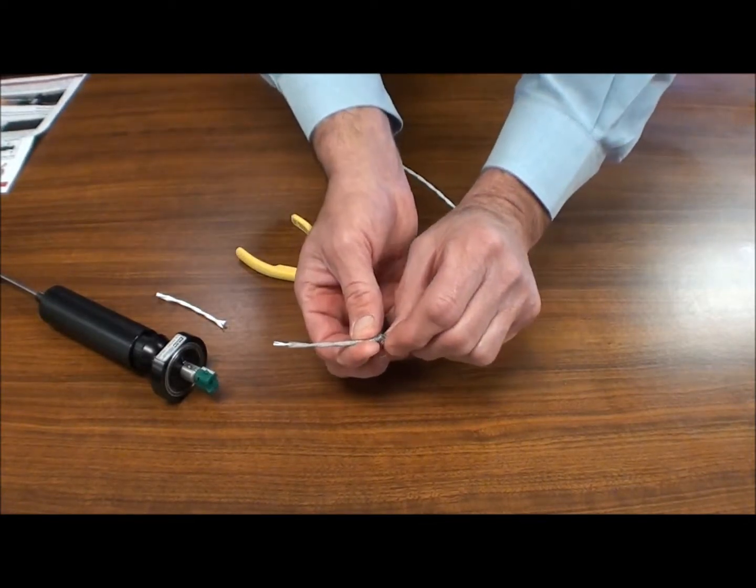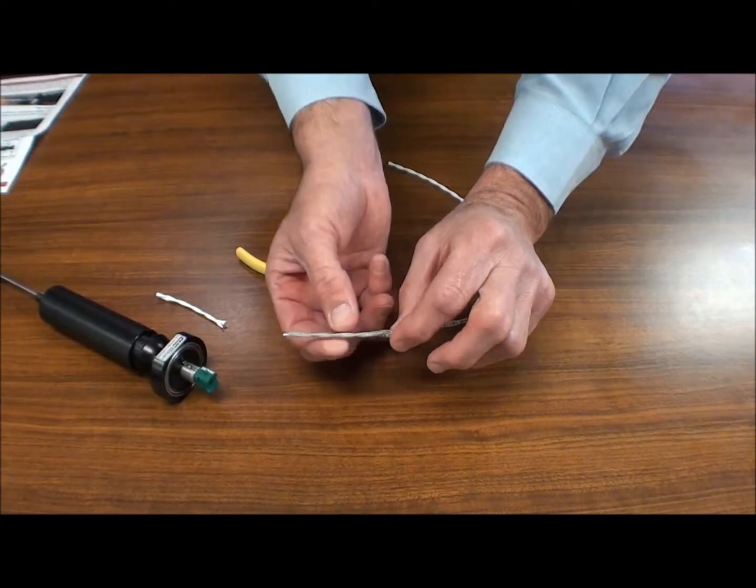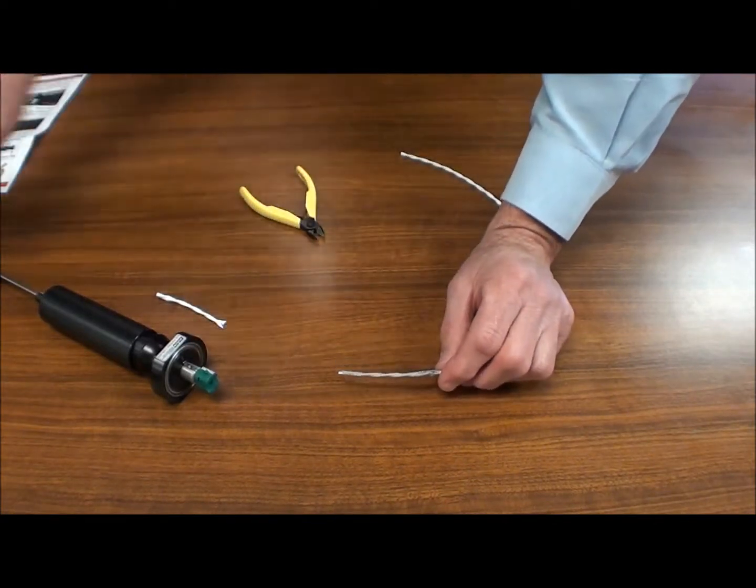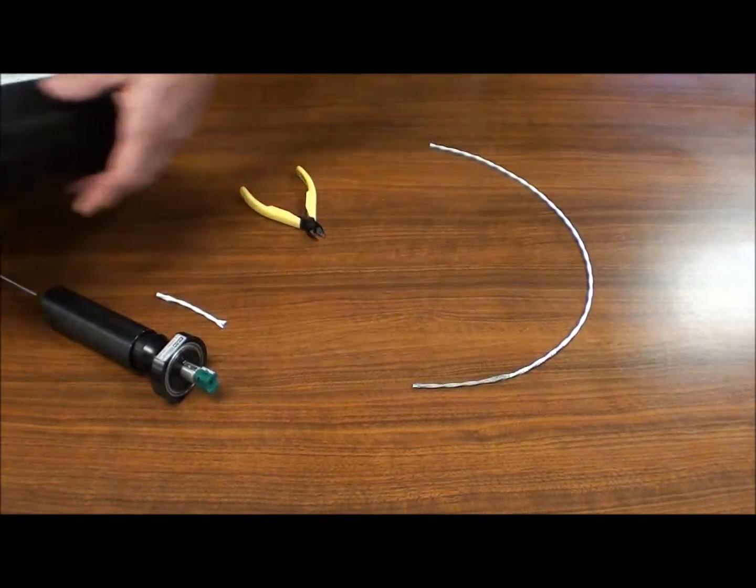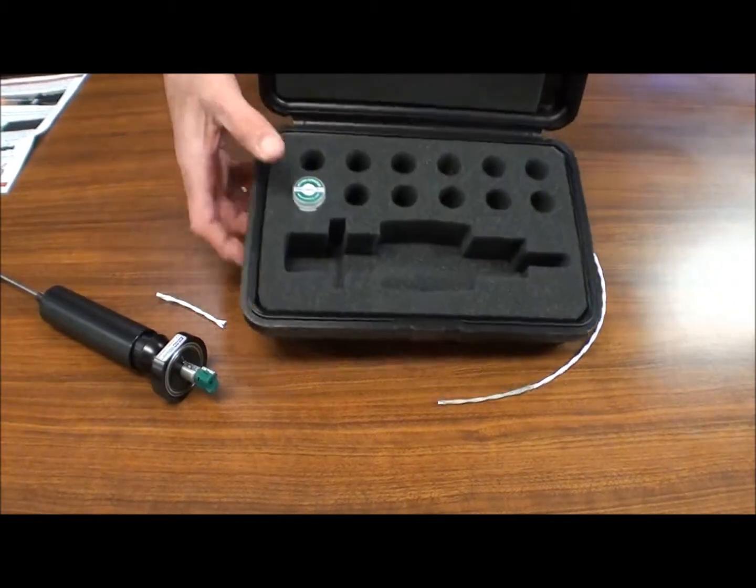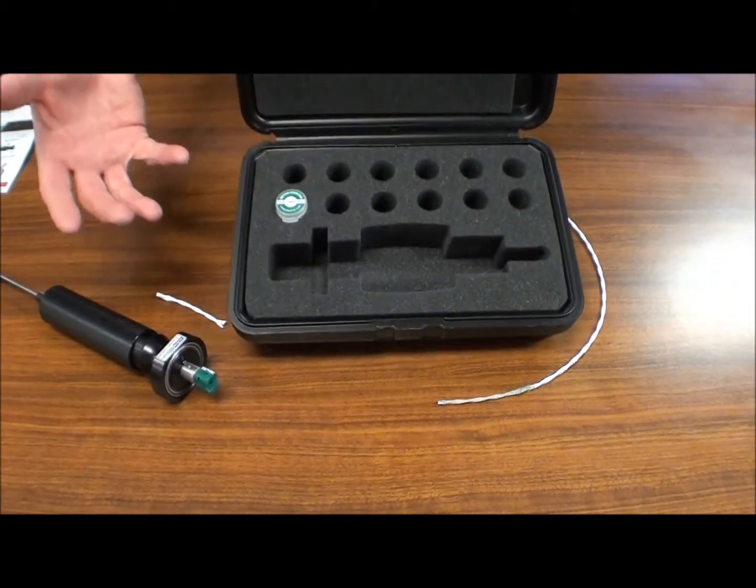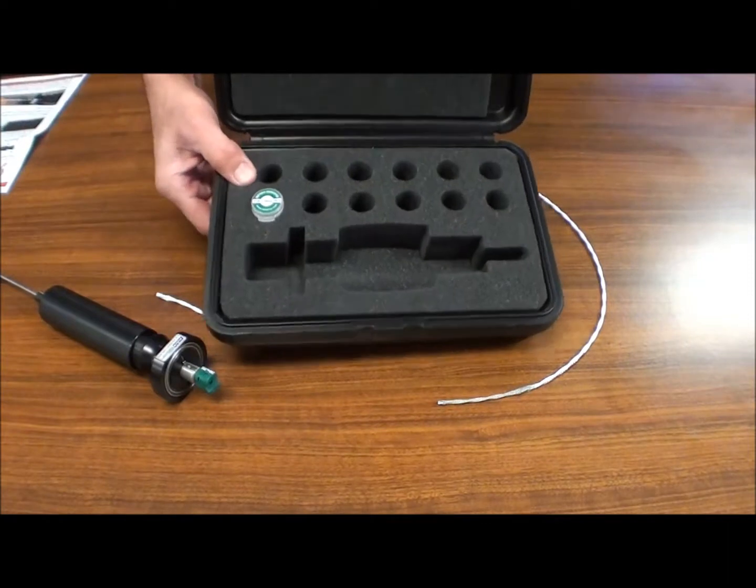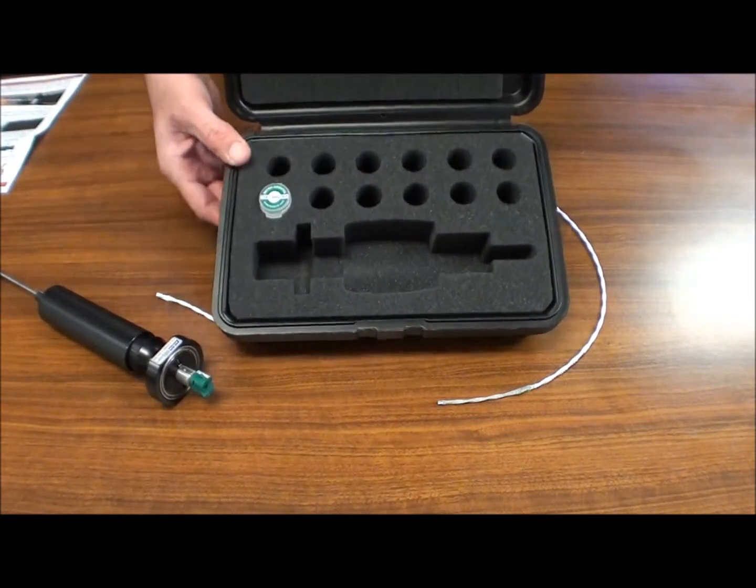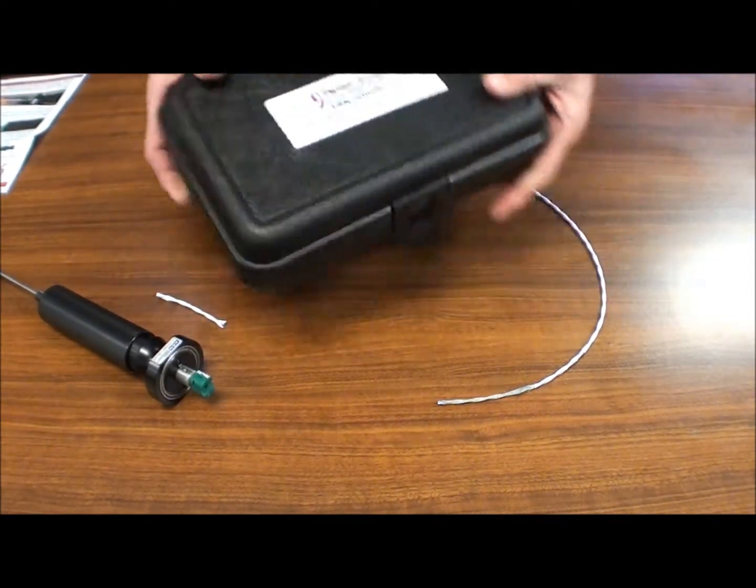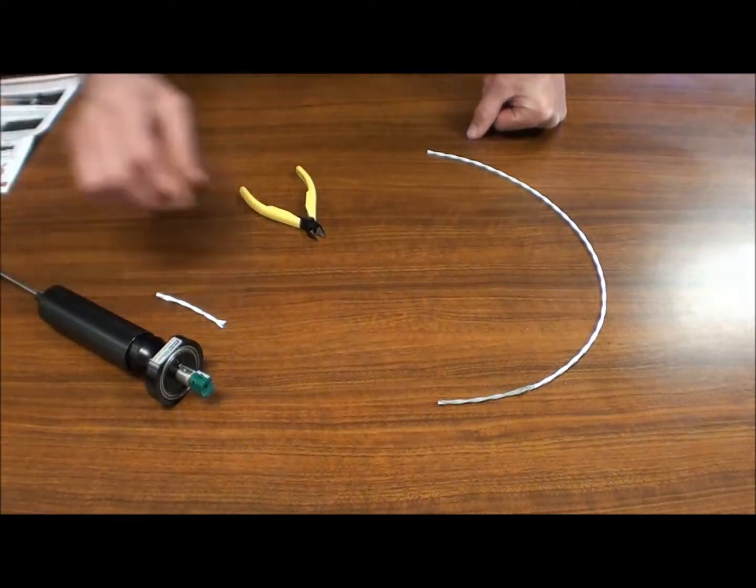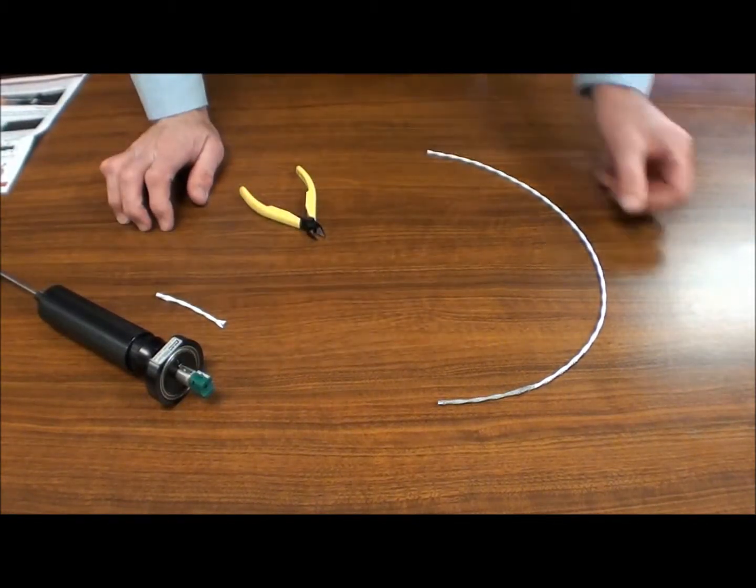You can pull this back and do whatever you need to do with your shielded braid. It also comes in a kit that you can have various blade types if you want to do various types of shielded twisted pair, coax, or single conductor. You can get that in a kit form that will cover multiple wire types.